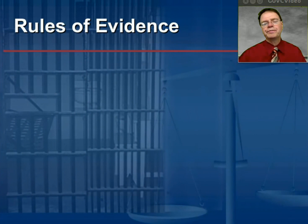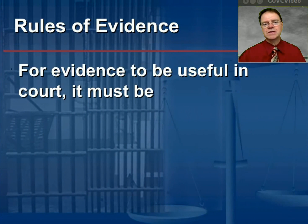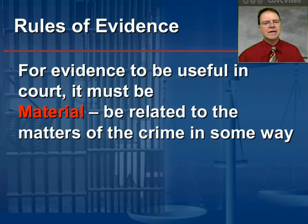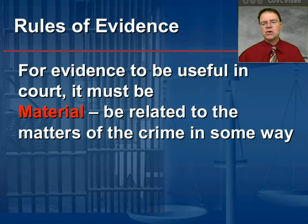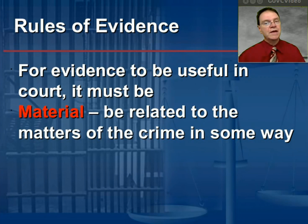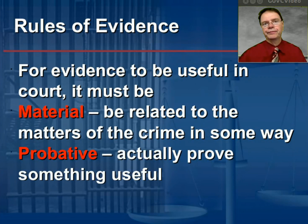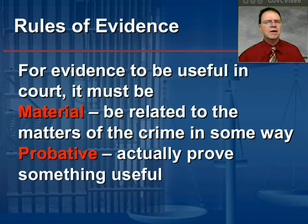There is more regarding rules of evidence. In order for evidence to be useful in a court, it has to be two things. First, it has to be material—in other words, it has to be related to the matters of the crime in some important way. You've probably heard of a material witness to a crime; they actually saw the crime being committed. But not only does it have to be material, that evidence also has to be probative—it actually has to prove something. And here's where forensic science can be most useful.